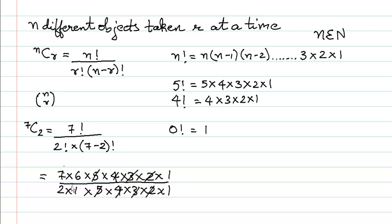We can ignore the 1s. So we get 7 into 6 divided by 2, which gives 42 divided by 2, and 7C2 equals 21.